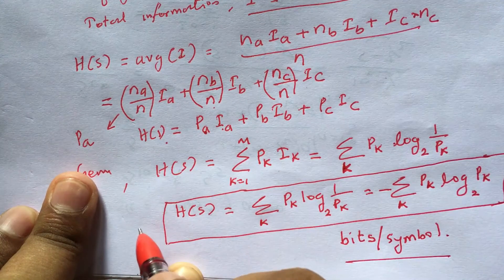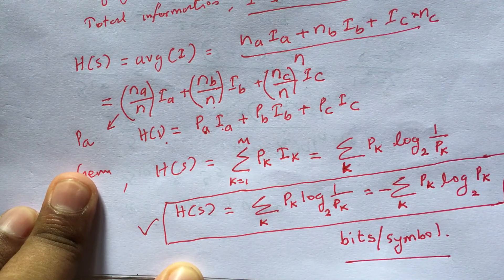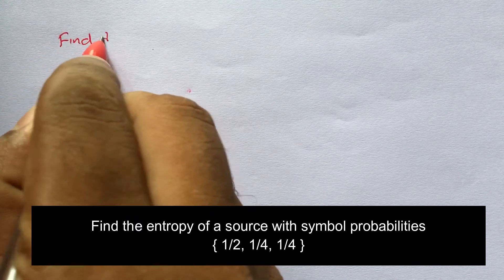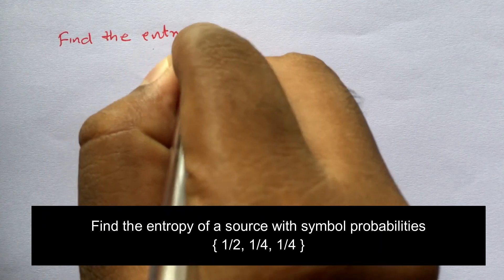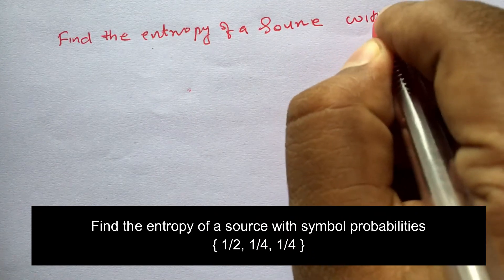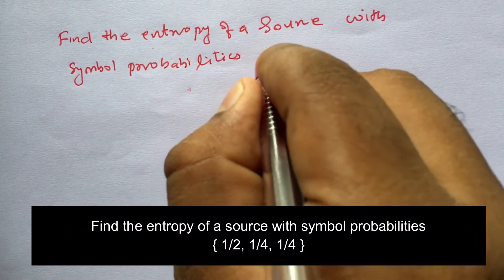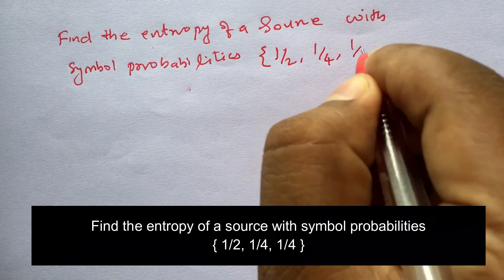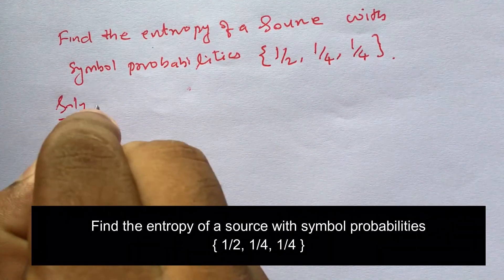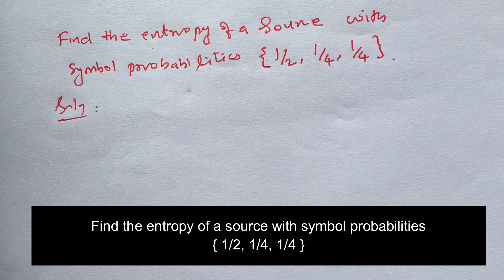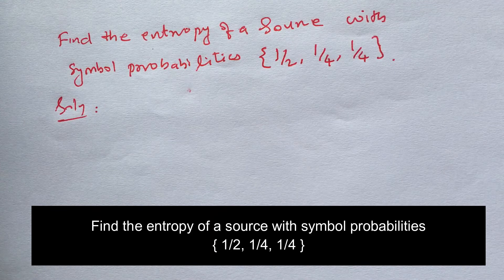This entropy formula H(S) = Sigma PK·log(1/PK) is important from an examination point of view. An important question is: find the entropy of a source with symbol probabilities one by two, one by four, and one by four. We can verify: one half plus one quarter plus one quarter equals one, so the probabilities are correct.